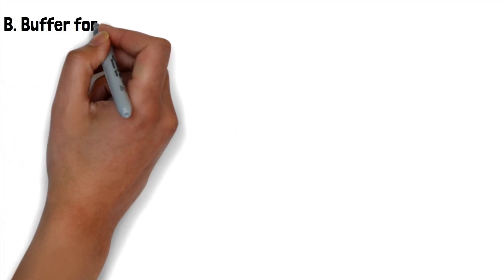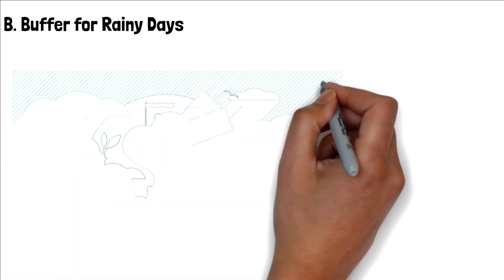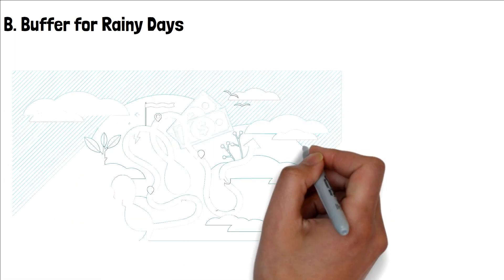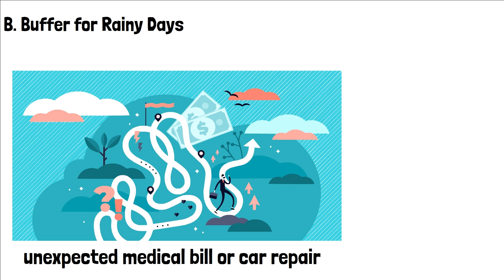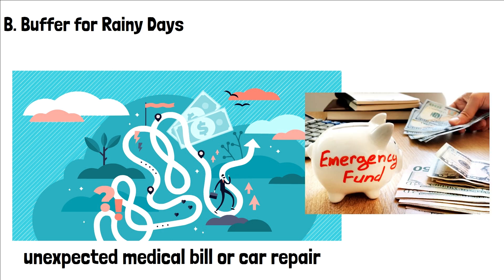B. Buffer for Rainy Days. Life with its twists and turns can be unpredictable. One day, everything's smooth, and the next, you're faced with an unexpected medical bill or car repair.